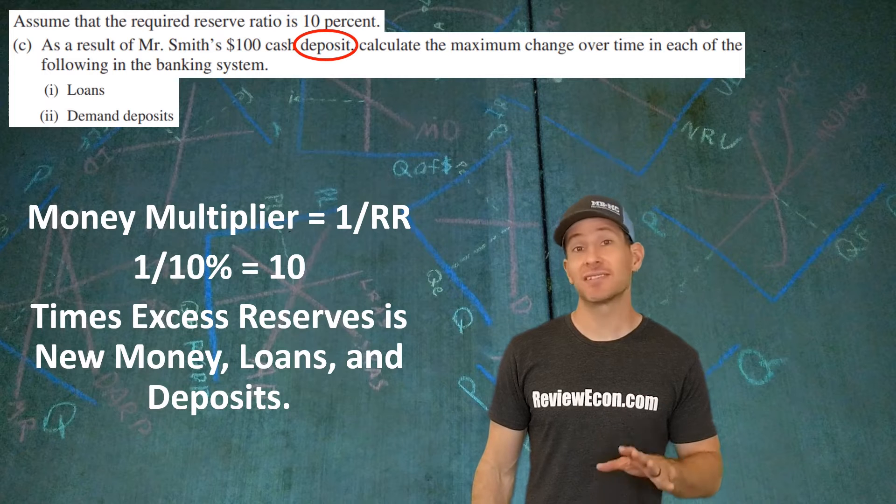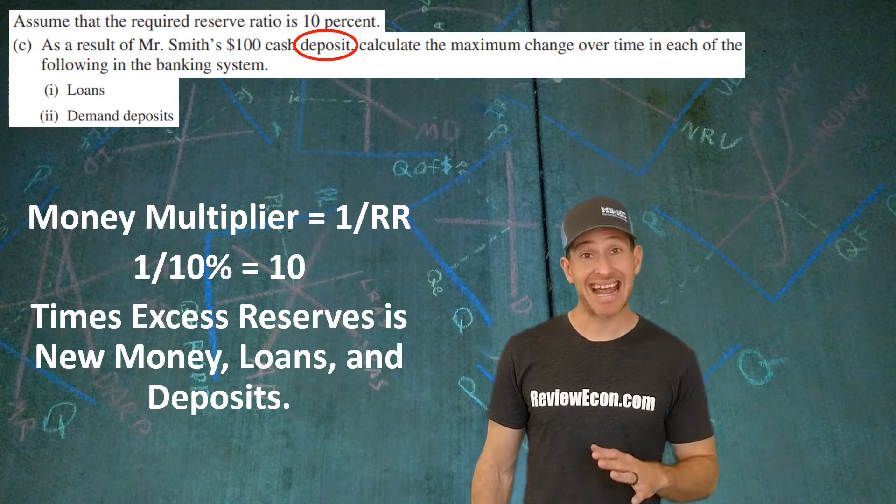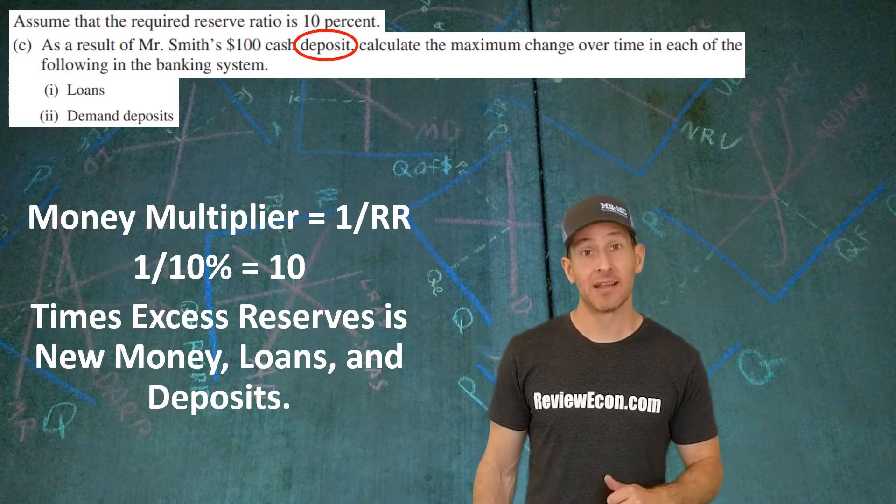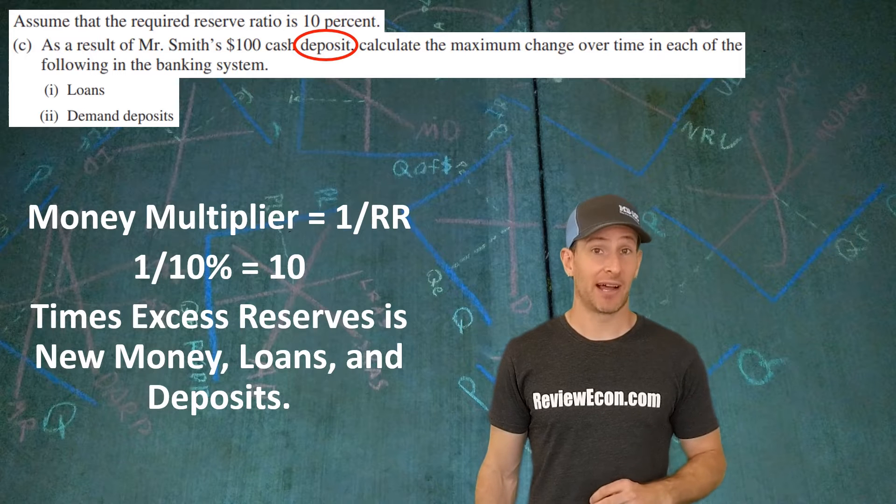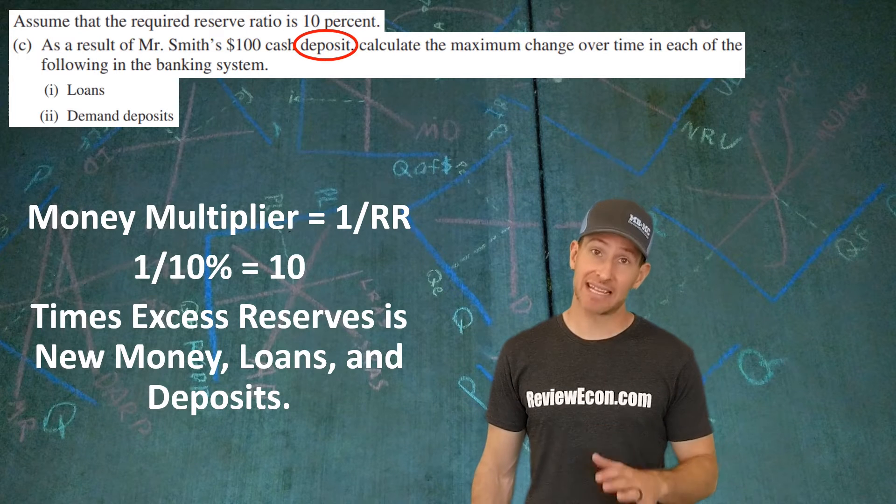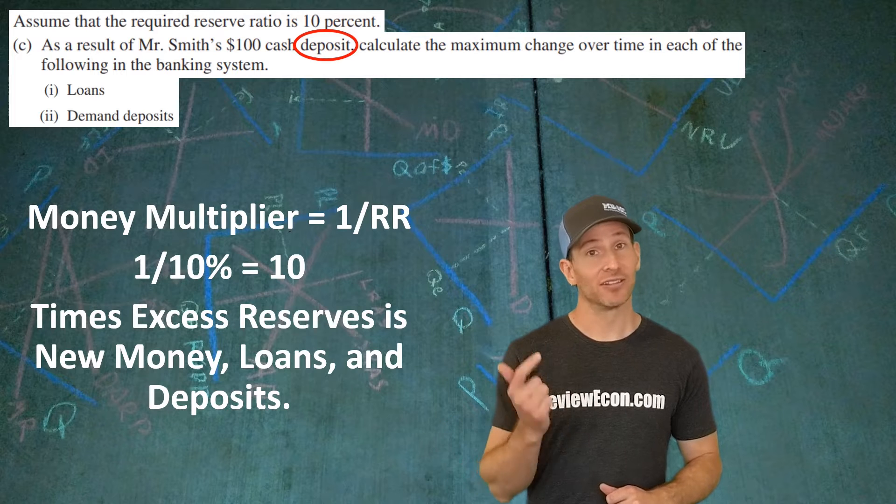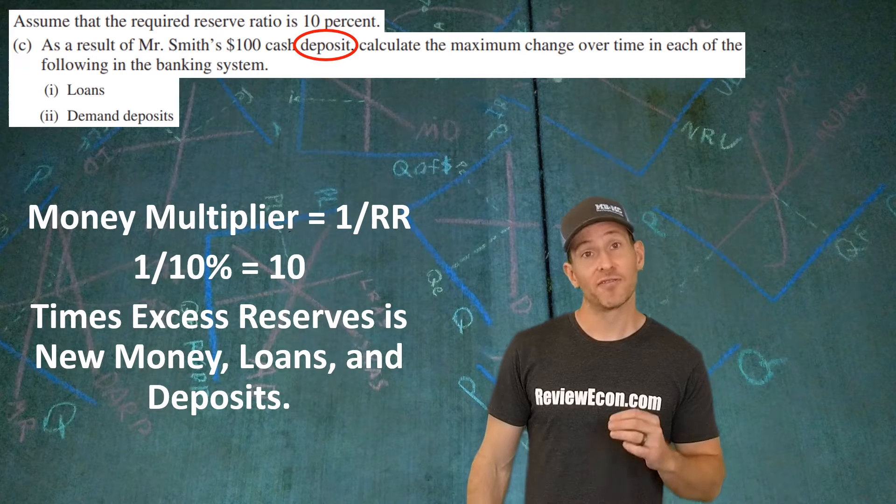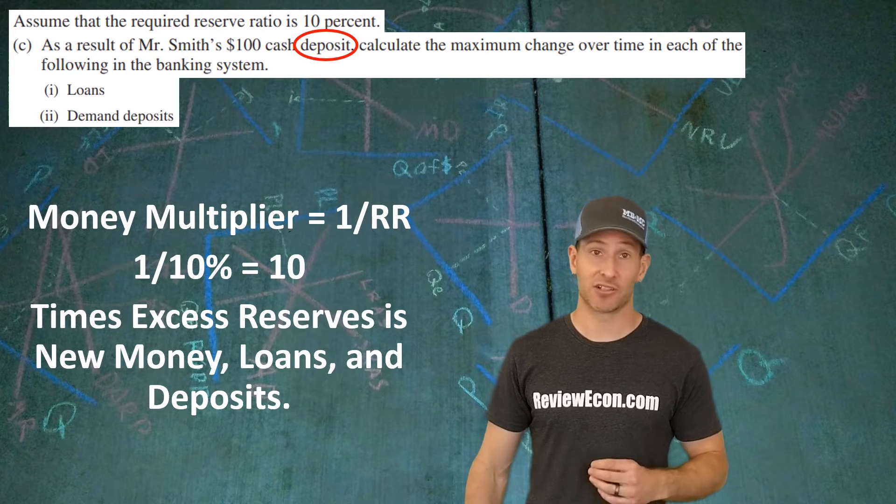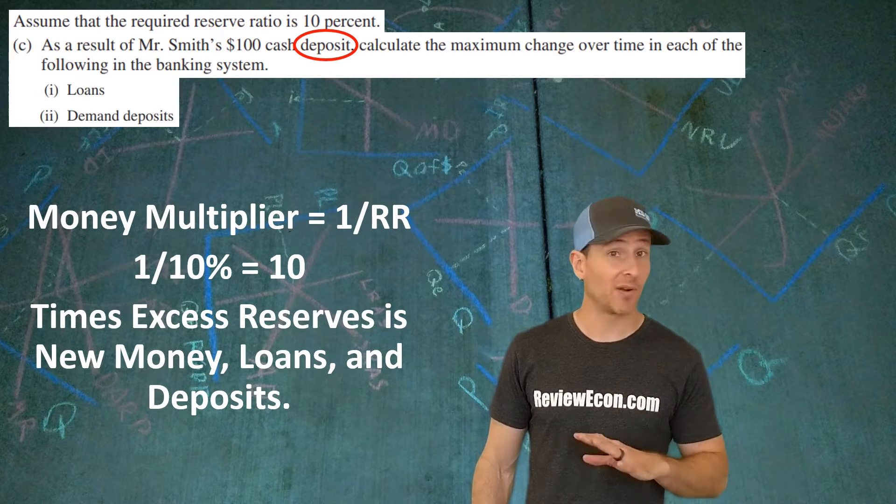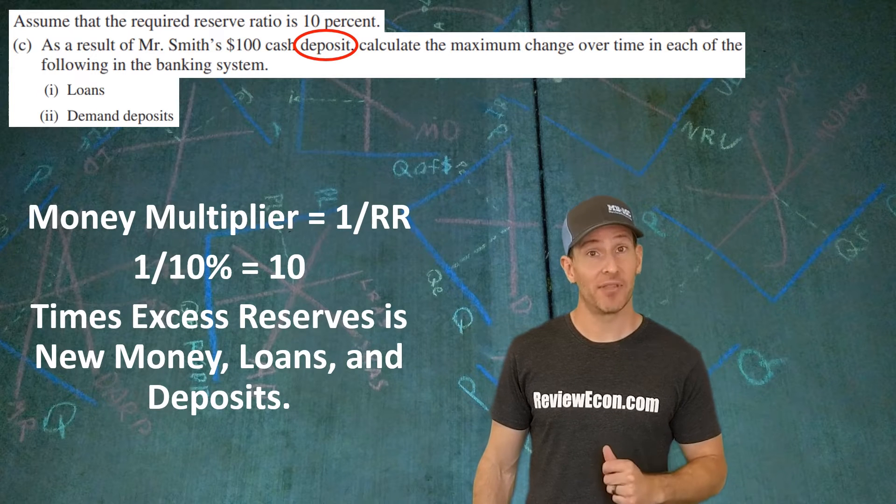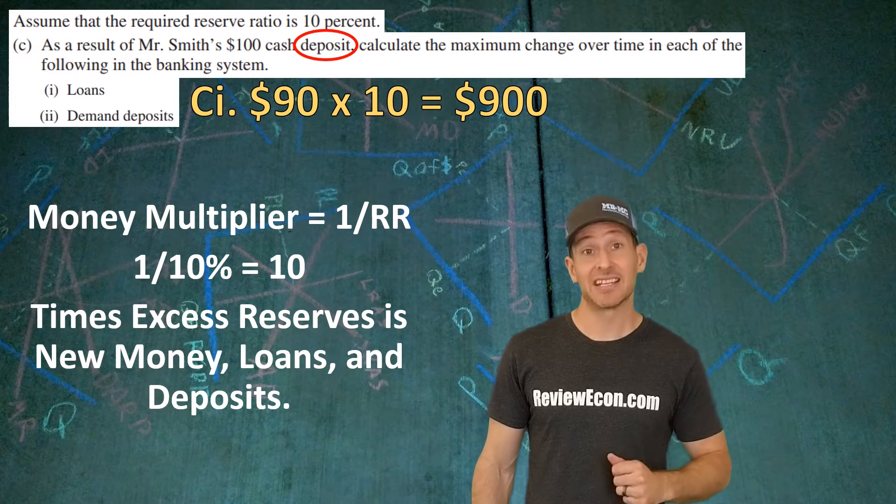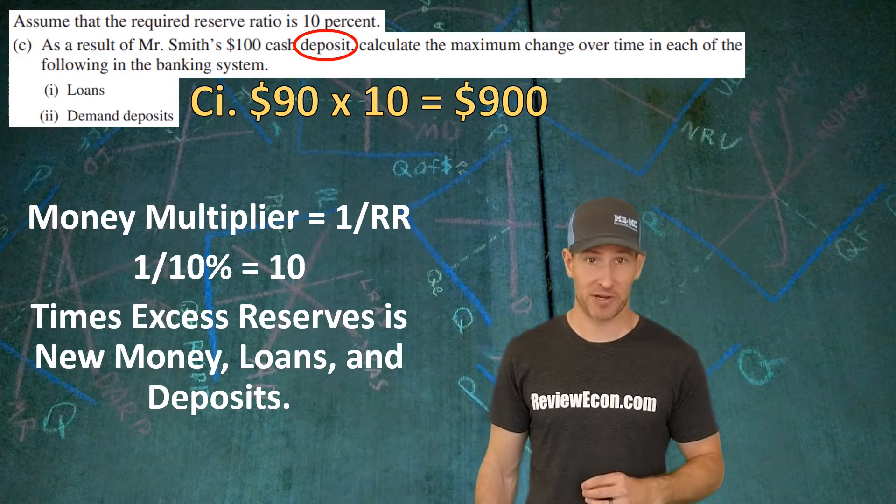10 times the excess reserves will give us the amount of loans, money, and deposits that can be created from the excess reserves. As we just calculated, First Superior Bank has $90 of excess reserves as a result of Mr. Smith's deposit. $90 times the multiplier of 10 gives us $900 of new money, loans, and deposits that can be created from that original deposit. The first question asks us how many dollars worth of loans. The original deposit was not a loan, so we stop there. It's 10 times the $90 of excess reserves gives us $900 in new loans that First Superior Bank can make.